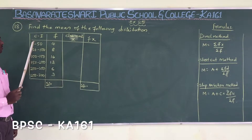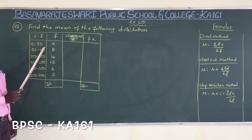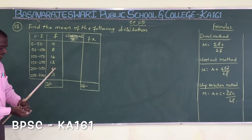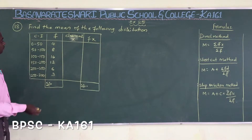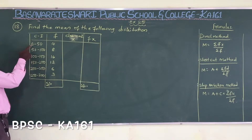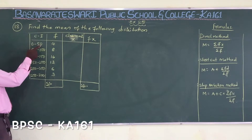What is class mark? It is the midpoint of the class interval. To find the midpoint, we add the lower limit plus upper limit divided by 2.